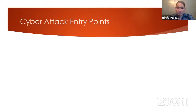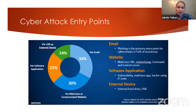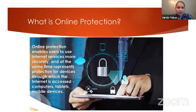According to research by Sophos, a leader in Gartner's Magic Quadrant for endpoint protection platforms, this slide shows the most common entry points for cyber attacks. As can be seen in the graph, most cyber attacks come via email at 33%, followed by malicious and compromised websites at 30%, then software applications at 23%, and finally via USB or external devices.